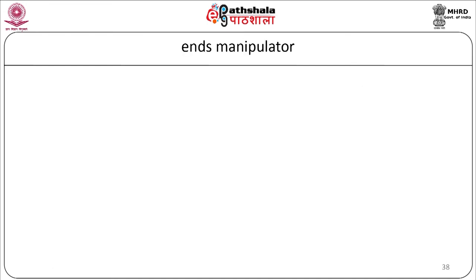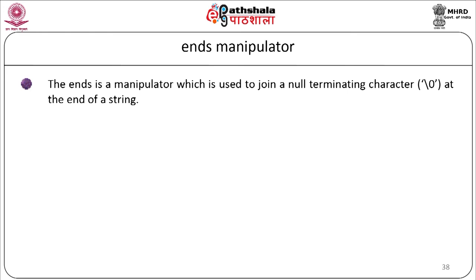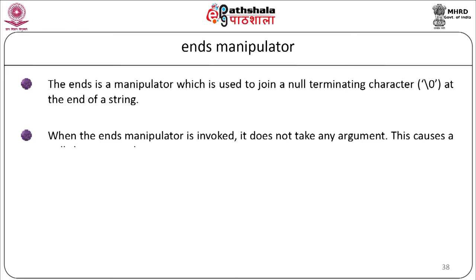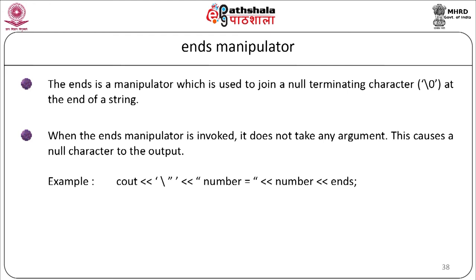The ends manipulator is used to join a null terminating character '\0' at the end of a string. When ends is invoked, it does not take any argument, causing a null character to be added to the output. For example: cout << 'number = ' << number << ends; followed by cout << endl. The output will be: number = 123.